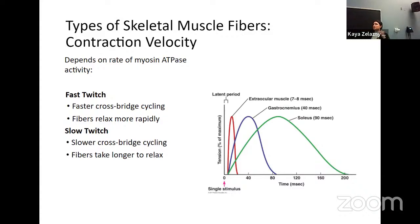A fast twitch fiber breaks ATP more quickly, meaning it can do that cross-bridge cycle more quickly, and it also relaxes more rapidly — it uses ATP quick, hits peak tension quick, then relaxes quick. Slow twitch fibers still contract, but they do it slowly. They have a type of myosin that takes a little longer to break ATP, meaning they take longer to hit their peak tension and also longer to relax.